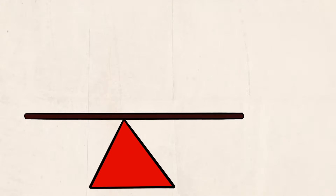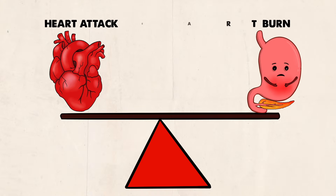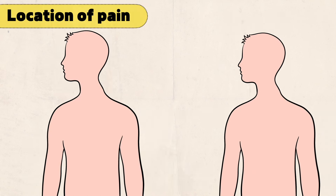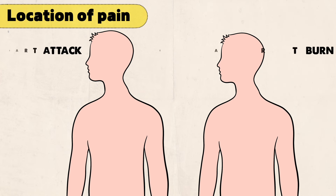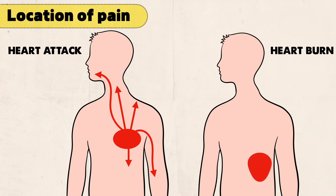One of the most important concerns is how to know if it is heartburn or a heart attack, as both can have similar symptoms. There are some key differences to help differentiate them. First is the location of pain. In a heart attack, the pain is usually felt in the center or left side of the chest and may spread to other areas like the arms, jaw, neck, back or stomach. In heartburn, the pain is usually felt in the upper abdomen and may radiate to the chest or throat.